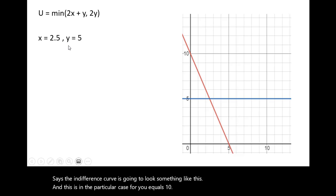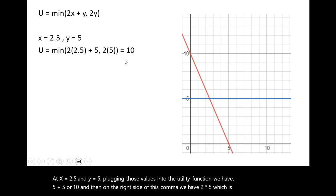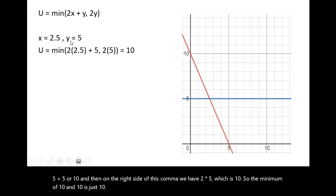And we can test a few consumption bundles, plug them into our utility function, and just see that we get 10 units of utility. So at this kink at x equals 2.5 and y equals 5, plugging those values into the utility function, we have 5 plus 5 or 10. And then on the right side of this comma, we have 2 times 5, which is 10. So the minimum of 10 and 10 is just 10. So this is one consumption bundle that will give us 10 units of utility.